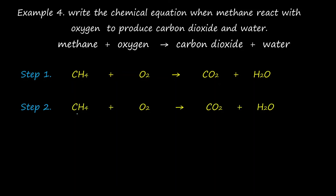The second step is to place the total valence of each atom above it. The total valence for carbon in methane is 4. The total valence for hydrogen in methane is also 4. The total valence of oxygen is 4, because each oxygen atom has a valence of 2 and there are 2 atoms — 2 times 2 equals 4. For carbon dioxide, the total valence of carbon is 4, and the total valence for oxygen is also 4. The total valence of hydrogen in water is 2, and oxygen is also 2.